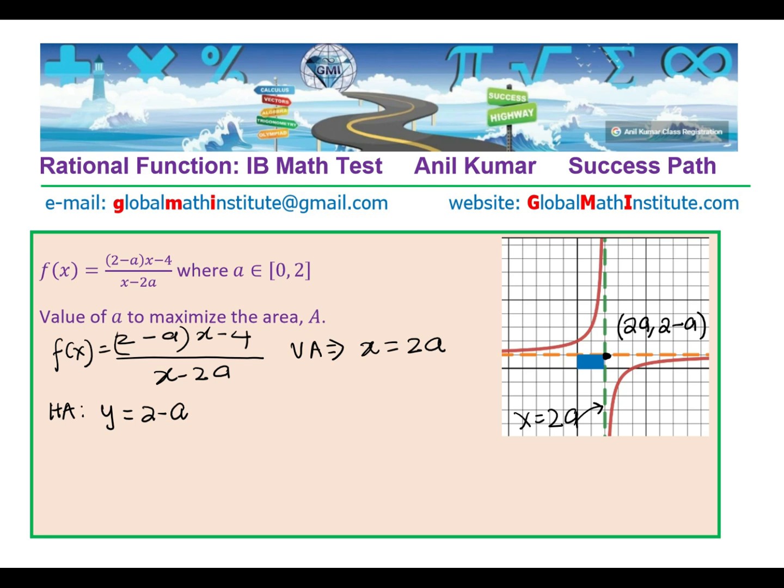So what should be the area of the rectangle? Area will be length into width, and in this case, x and y coordinates are 2a and 2-a. So it will be 2a times (2-a). So that becomes the area of the rectangle.